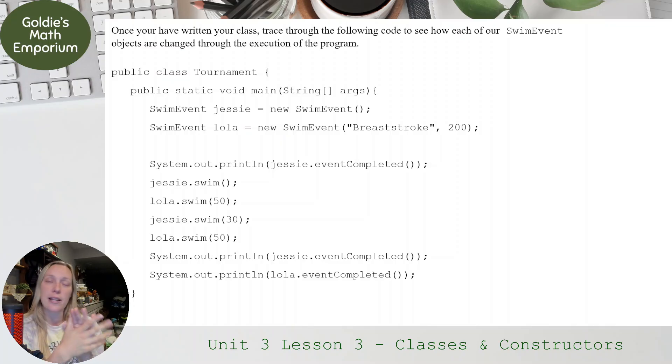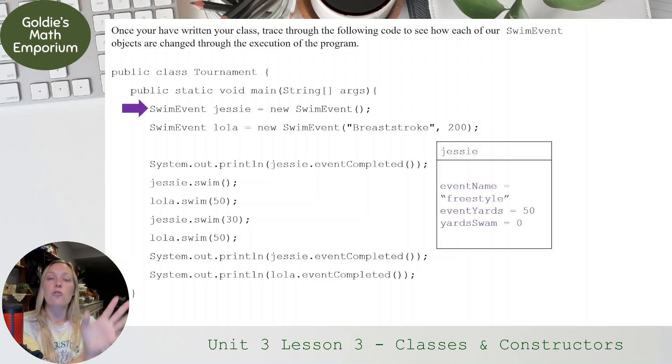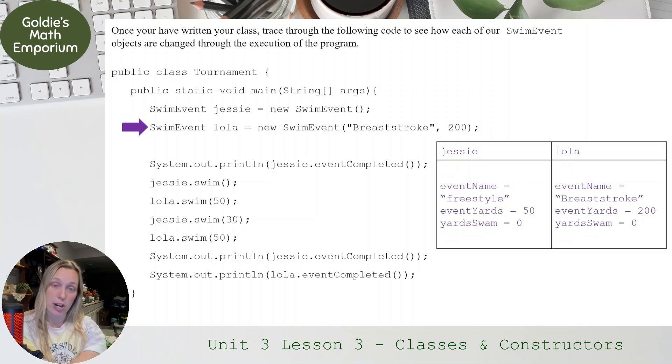So again, not included on the AP exam, but I want you to understand how this program is going to work with the code. So tracing through, the first thing we have here is SwimEvent Jesse equals new SwimEvent. So Jesse is created with the default constructor, so his eventName is going to be Freestyle, eventYards is 50, yardsSwim is 0. Next, we have Lola. She's going to be created with our parameter constructor. So she's going to have an eventName of Breaststroke. She's going to swim 200 yards, and she's starting off at 0. So these are using our two constructors to create our two objects.